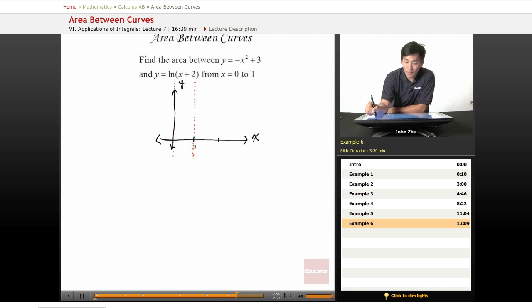And we know that negative x squared plus three is something like this, but since we're only interested in between this region, we don't need to draw the other half of the graph.